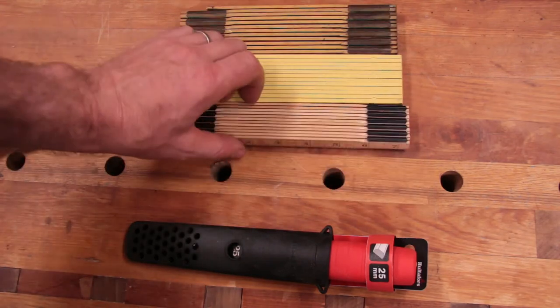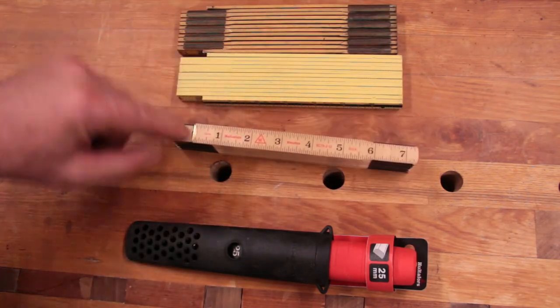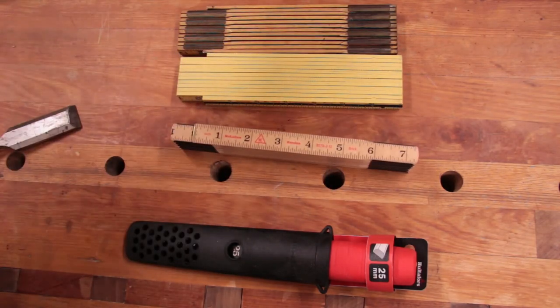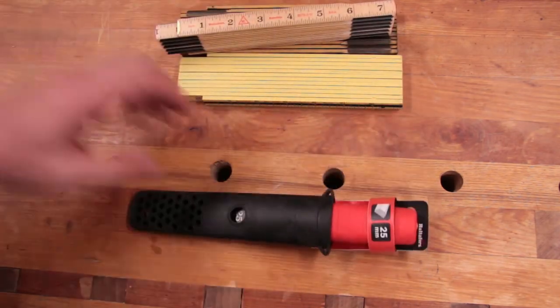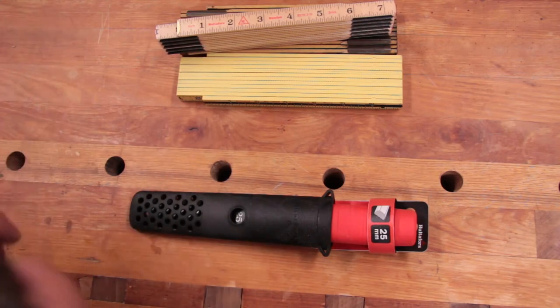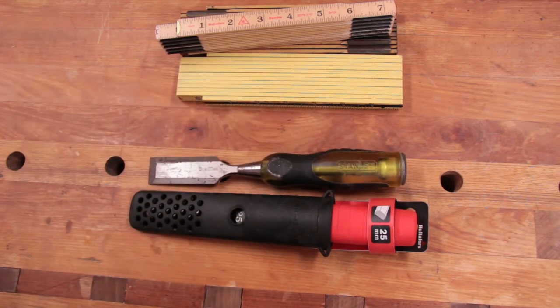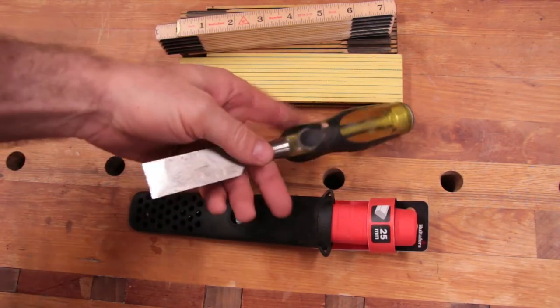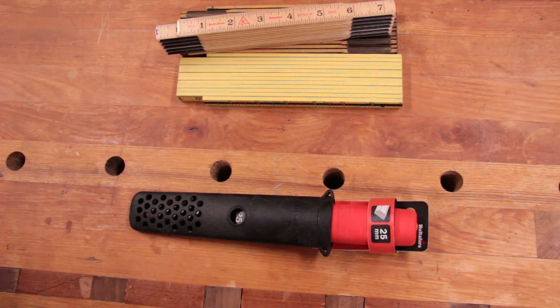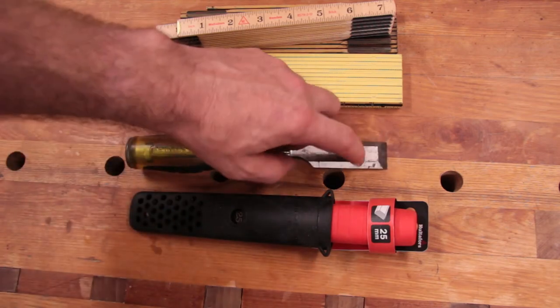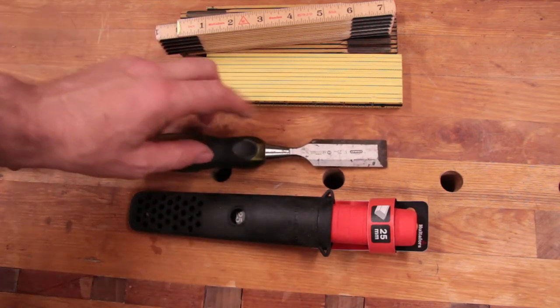While I was on Amazon searching for this Holtifors ruler, I found that they sell chisels. Now I like having a chisel in my tool pouch just for doing sort of rough chiseling stuff. I started out with this Stanley. But this chisel does not hold an edge very well at all.